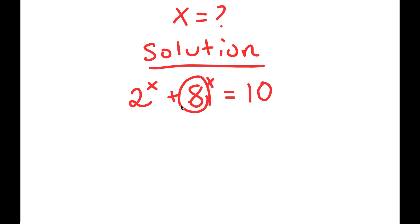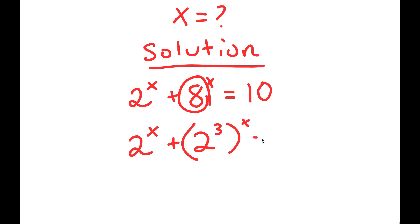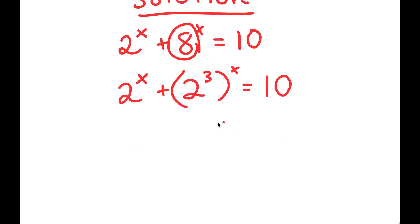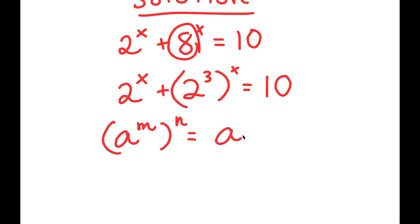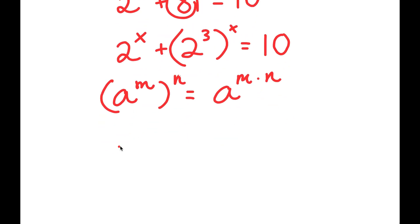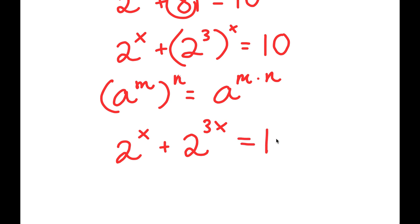From here, 8 can be rewritten as 2 to the power of 3. So I get 2 to the power of x plus 2 to the power of 3 to the power of x is equal to 10. Now, if I have something in the form a to the power of m to the power of n, this is equal to a to the power of m times n. So 2 to the power of 3 to the power of x is the same thing as 2 to the power of 3x, and now this is equal to 10.